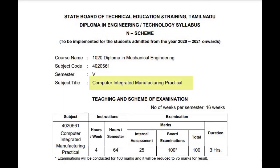Subject title: Computer Integrated Manufacturing practical lab. Total semester is 16 weeks, 64 hours per semester, with 4 hours weekly. Examination: internal assessment is 25 marks, board examination is 100 marks total, with a duration of 3 hours. Board examination carries 75 marks.